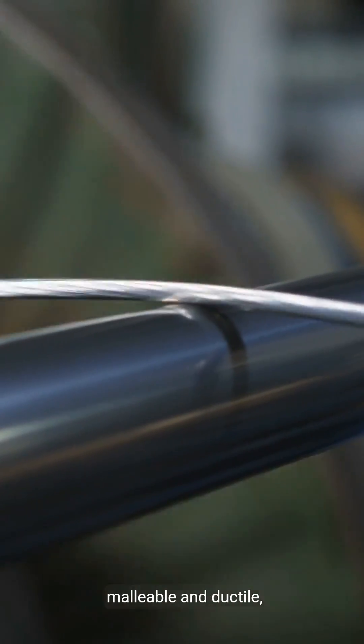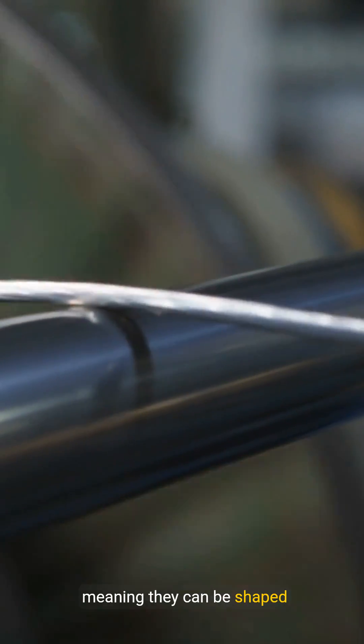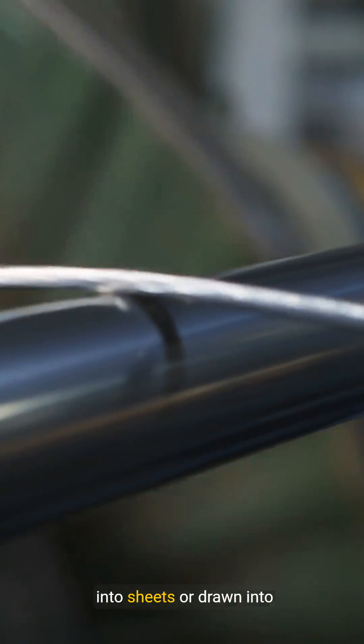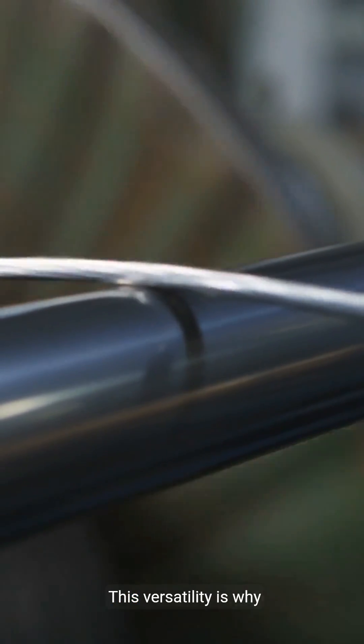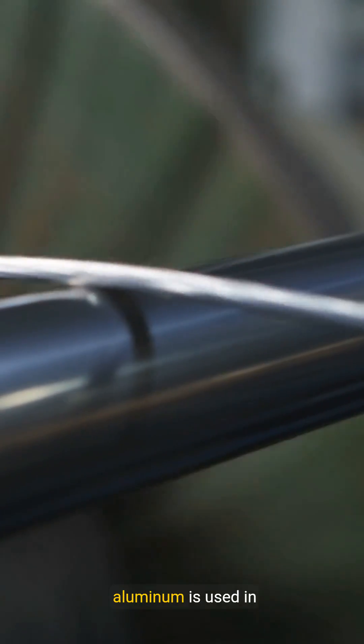Furthermore, metals are malleable and ductile, meaning they can be shaped into sheets or drawn into wires without breaking. This versatility is why aluminum is used in everything from packaging to aircraft construction.